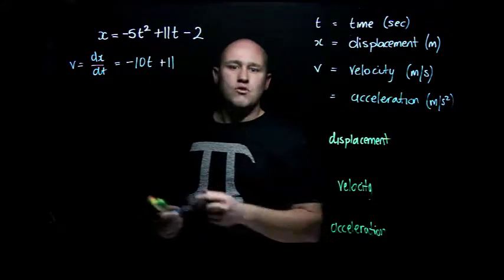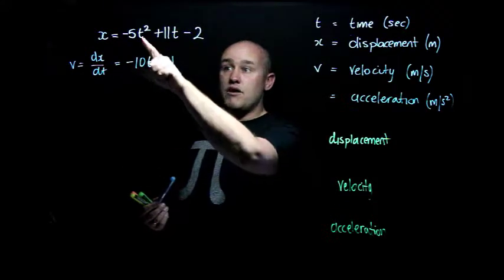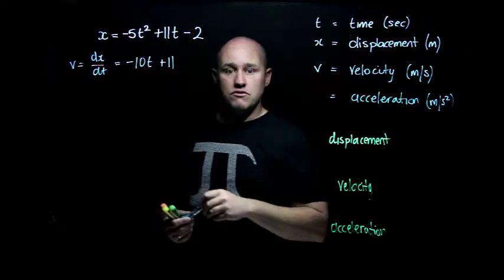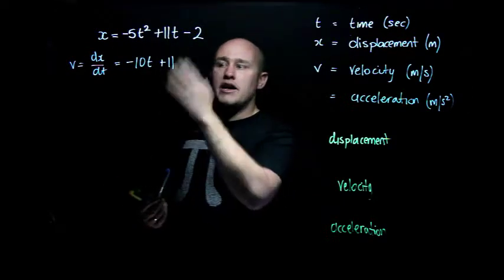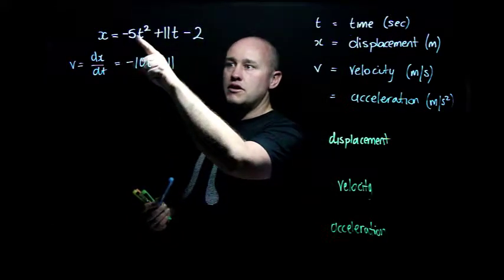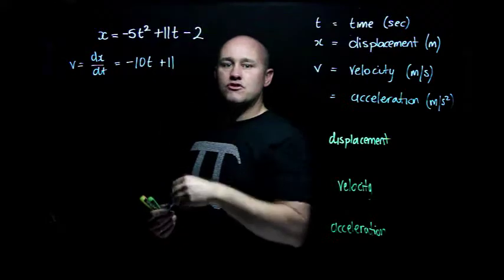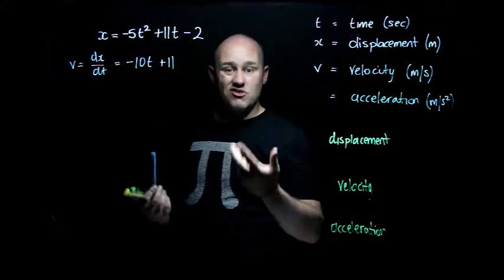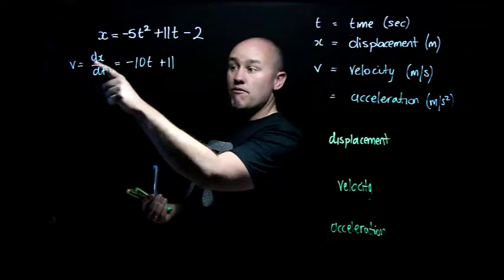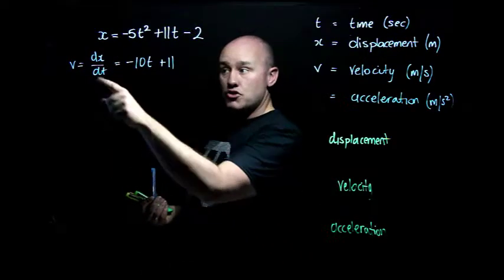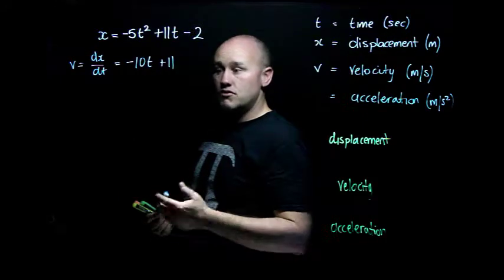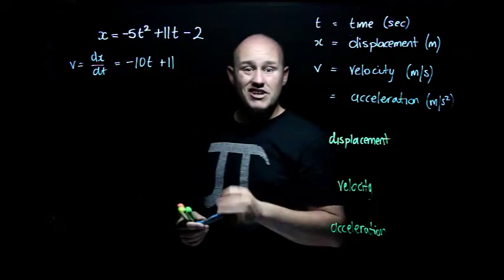This function is a position function. It will tell me where my thing is after a number of seconds, how far away it is from wherever we started. If I put t equals 0 into here, then I get x equals negative 2. So whatever it is, x started at negative 2. After one second, I get x equals negative 5 plus 11 minus 2, which is 4. This tells me where I am; this tells me my velocity at that point.